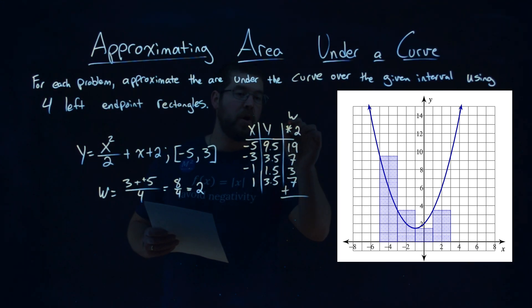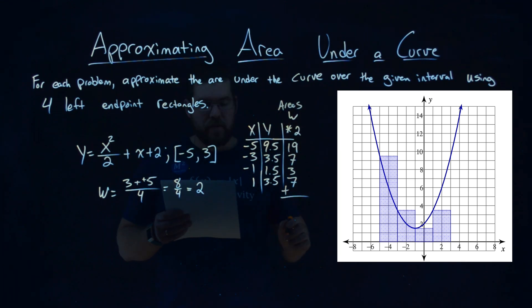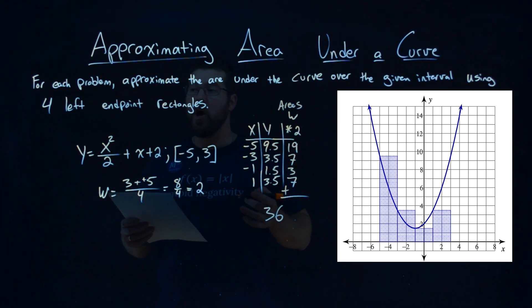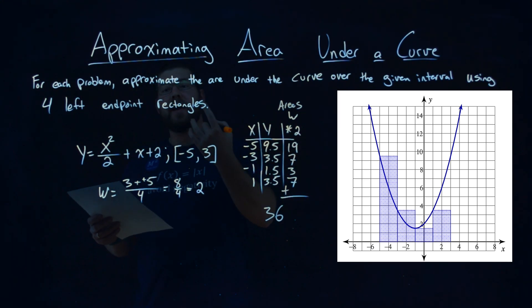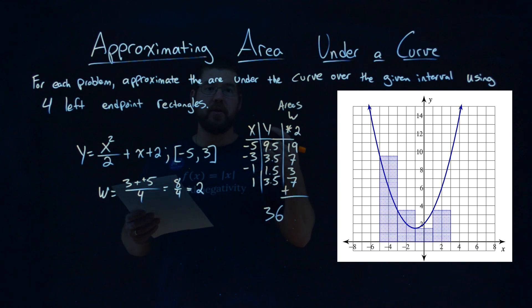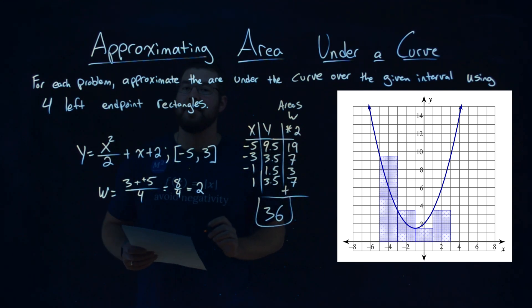At this point, we just have to add up all of these areas. We add them all together, and we get 36. That's our answer. By using the four left endpoint rectangles, we get an area under the curve of 36.